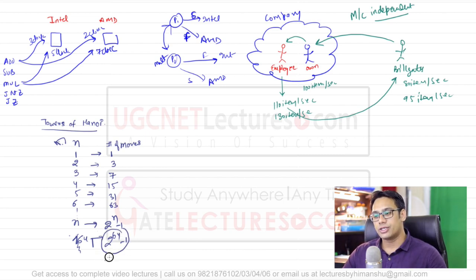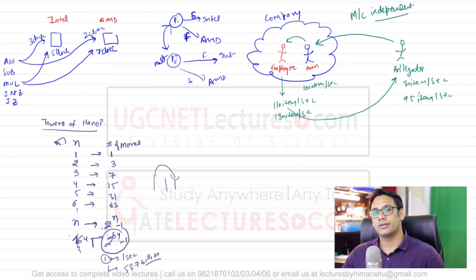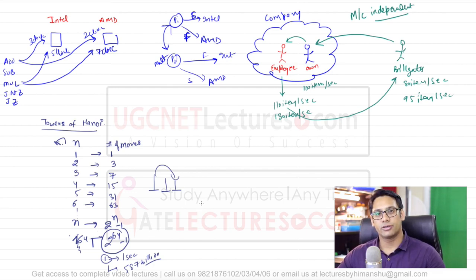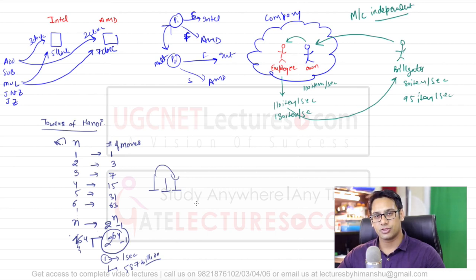This number is so huge that if you take one move per second, it is going to take roughly 587 billion years to move all 64 plates from the first tower to the third tower. Even if you take the world's fastest supercomputer and write a program to solve this problem — and writing the algorithm is very easy — executing it with 64 discs will still take more than 500 billion years.